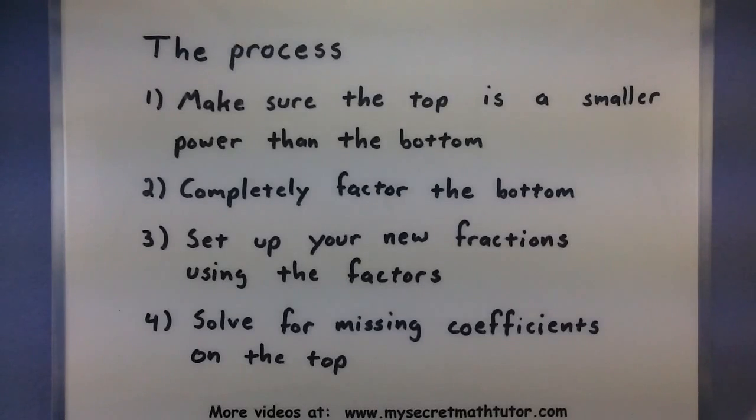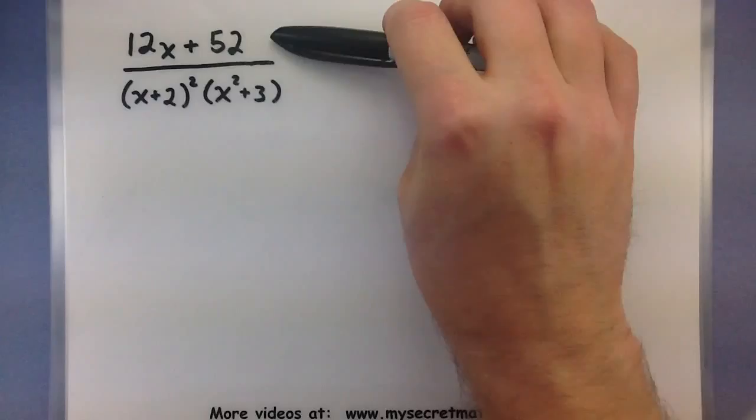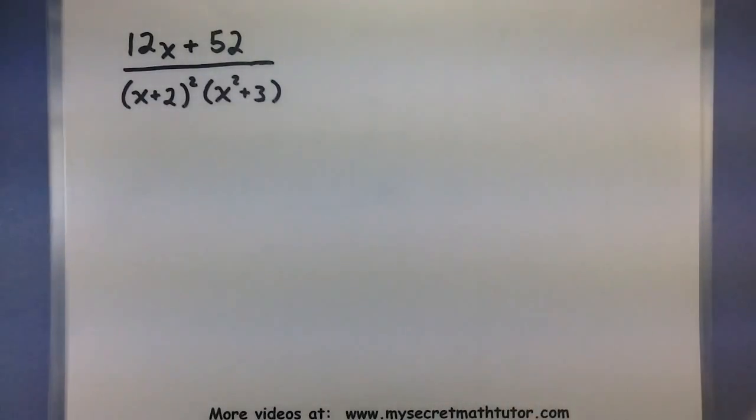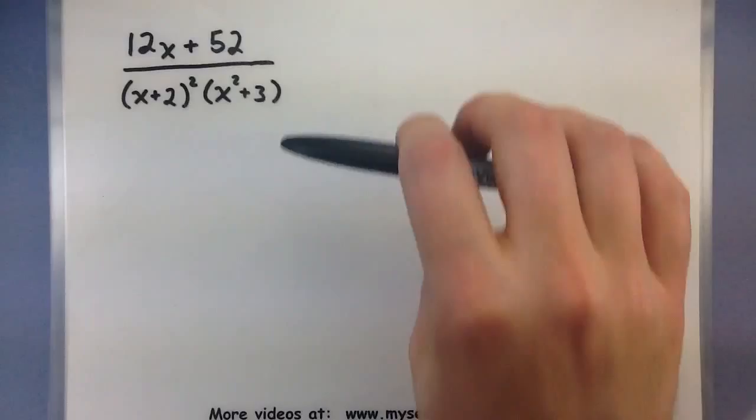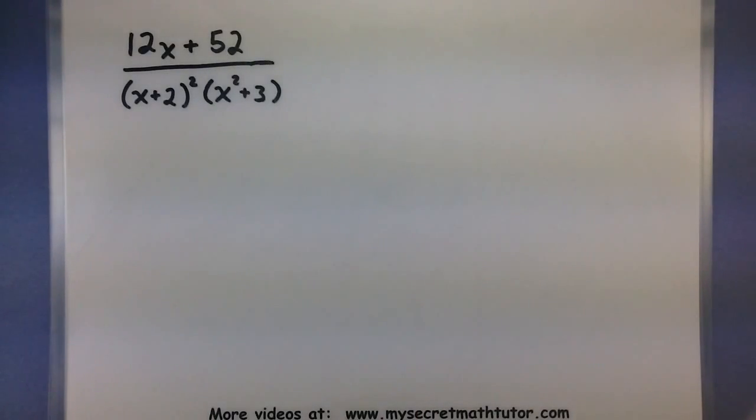So the problem we have today is this: 12x plus 52 all over x plus 2 squared multiplied by x squared plus 3. So the very first thing I'm going to check in my process is to make sure the top polynomial is smaller than the bottom one. And what I can see is the top is basically a first power, just a single x, whereas the bottom has a couple of x squared, so essentially x to the fourth on the bottom. So step one is looking good, my top polynomial is smaller than the bottom.